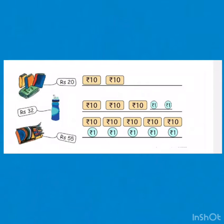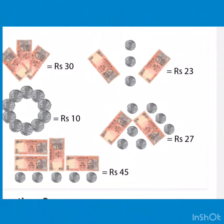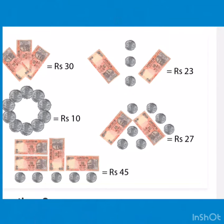How much money do the notes and coins make? Rupees 30 — 3 10 rupee notes. 2 10 rupee notes and 3 1 rupee coins is equal to rupees 23. 10 1 rupee coins is equal to rupees 10.